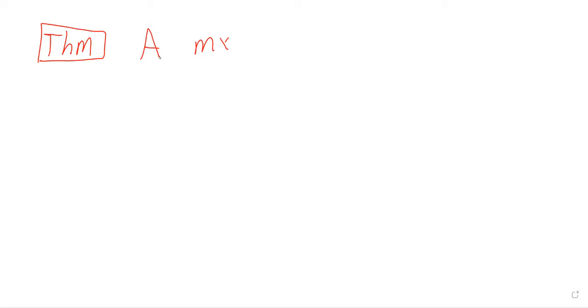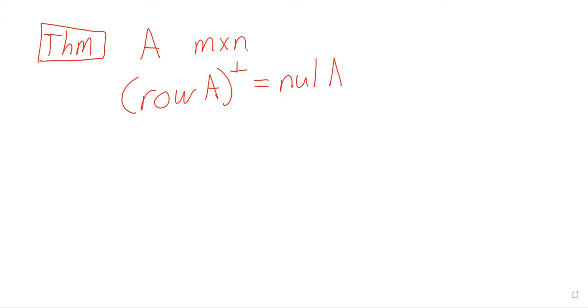Picking up where we left off on Tuesday. Theorem: let A be an M by N matrix. Then the orthogonal complement of the row space of A is the null space of A.